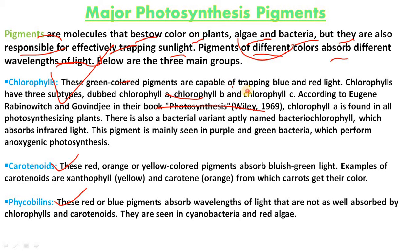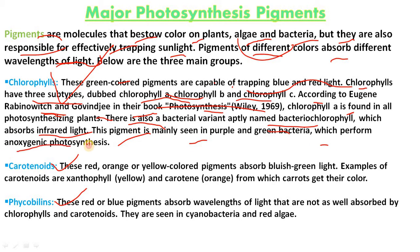Chlorophylls are the green colored pigments capable of trapping blue and red light. Chlorophylls have subtypes: chlorophyll a, chlorophyll b, and chlorophyll c. According to Rabinowitch and Govindjee in the book 'Photosynthesis' (Wiley, 1969), chlorophyll a is found in all photosynthesizing plants. There is also a bacterial variant called bacteriochlorophyll, which absorbs infrared light and is mainly seen in purple and green bacteria that perform anoxygenic photosynthesis.